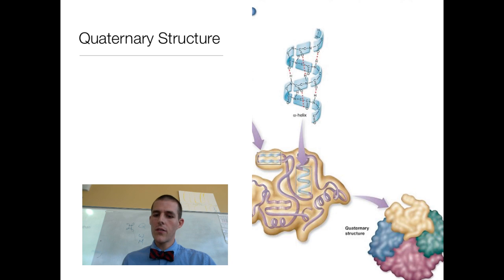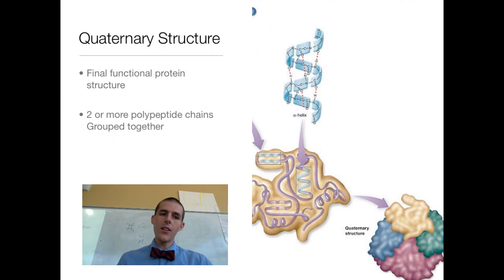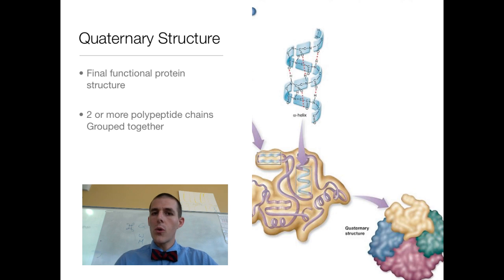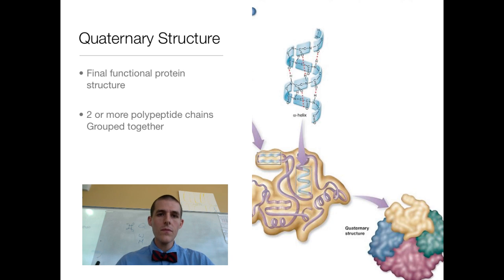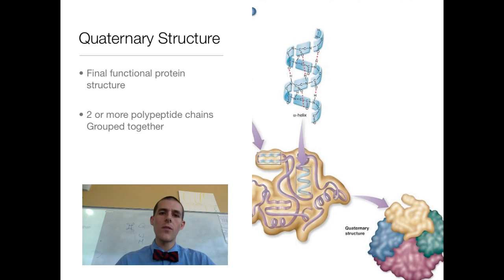Our functioning protein comes in the quaternary structure, which you see at the bottom right of your screen. In the quaternary structure, you have two or more polypeptide chains grouped together. The one shown has four chains that have hooked together and are working together. Some proteins have fewer chains, some have a lot more, but in quaternary structure you've got multiple polypeptide chains grouped together into a working, functioning protein.